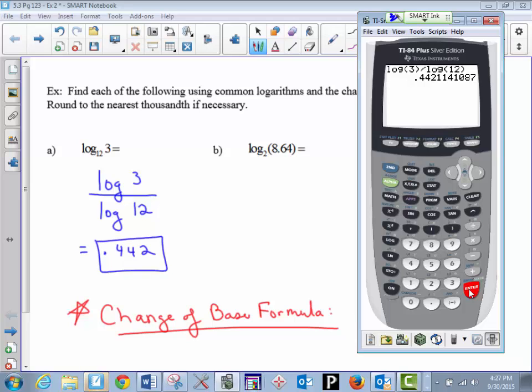The change of base formula is a very easy formula, but it's one that you can easily forget if you don't have it memorized. Next one over, we have log base 2 of 8.64. To type it in our calculator, we would do log base 10 of the argument on top, divided by log base 10 of 2. So log 8.64, close parenthesis, divided by log of 2, close parenthesis, press enter. This is 3.111 if we round to the nearest thousandth.